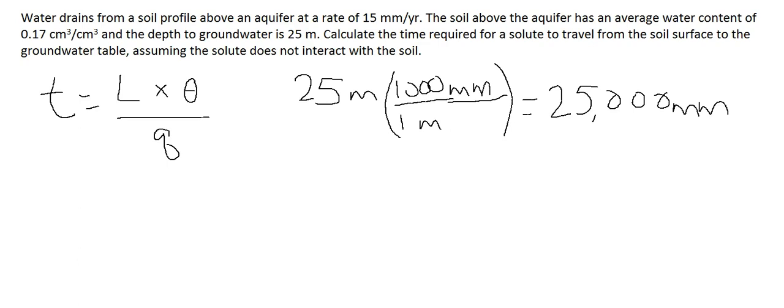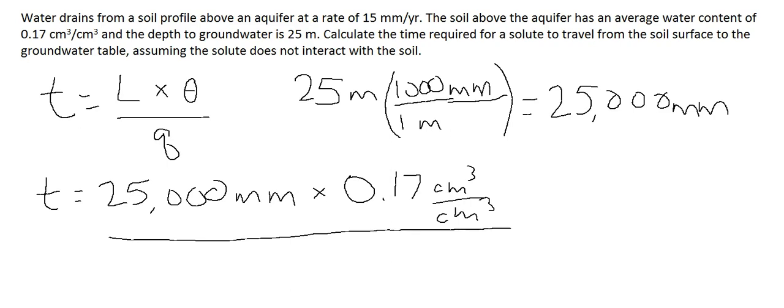So now we have that T is equal to 25,000 millimeters multiplied by our volumetric water content, which is 0.17 centimeters cubed per centimeters cubed, and we have that whole quantity divided by our flux, which is 15 millimeters per year.